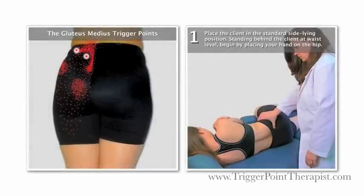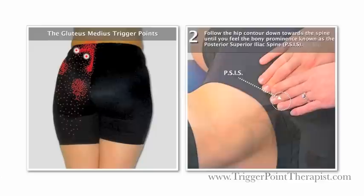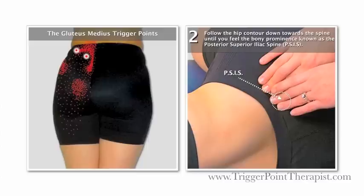To locate and release the gluteus medius trigger points, start by placing your client in the standard side-lying position. Their top leg should be bent, bottom leg straight, and arms crossed. Stand behind the client at waist level and begin by placing your hand on their hip. Use your fingertips to follow the hip contour down towards the spine until you feel the bony prominence known as the posterior superior iliac spine, or PSIS. This is your landmark.